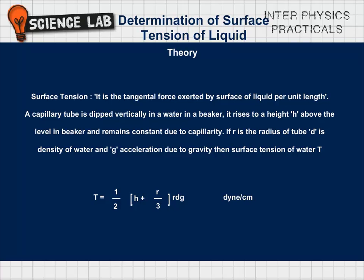Theory: Surface tension. It is the tangential force exerted by the surface of a liquid per unit length. A capillary tube is dipped vertically in water in a beaker. It rises to height h above the level in the beaker and remains constant due to capillarity. If r is the radius of the tube, D is the density of water, and g is acceleration due to gravity, then surface tension T is equal to (1/2) × (h + r/3) × r × d × g dyne per centimetre.